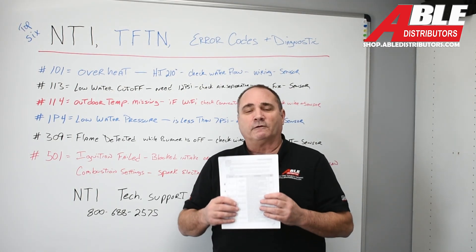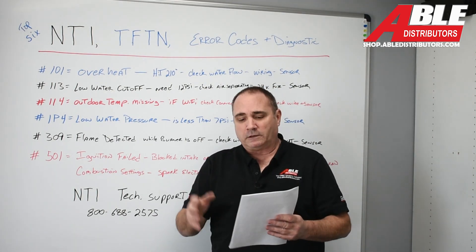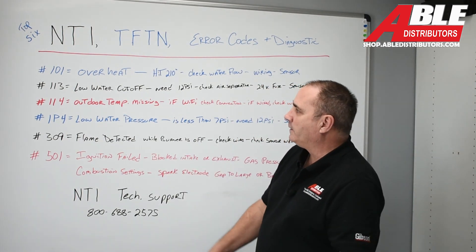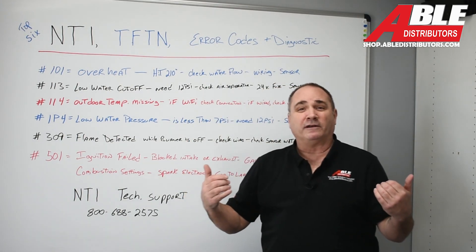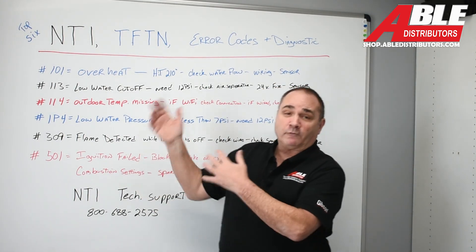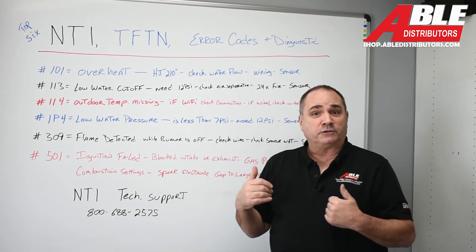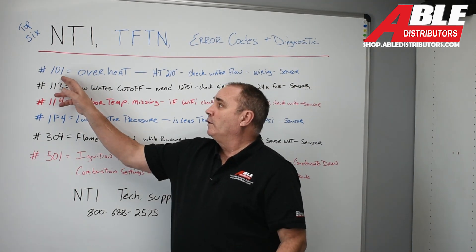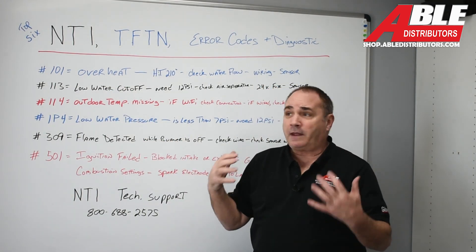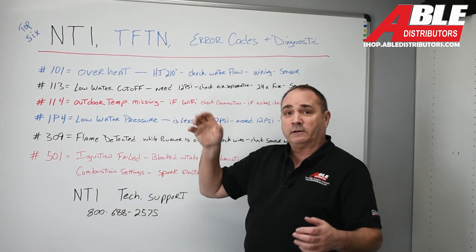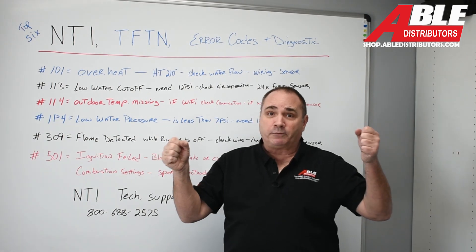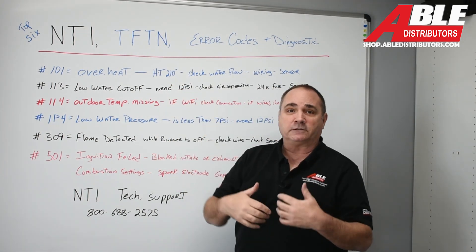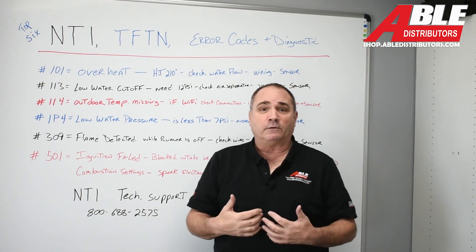NTI puts together a very, very good manual — one of the best, probably. They have a few pages of error codes, and I went through and picked out the ones you might run across and what you would check. Error code 101 is an overheat. That means the boiler, either on the outlet pipe or the inlet pipe or both, hit 210 degrees — obviously it's gonna lock itself out. It's way too hot.